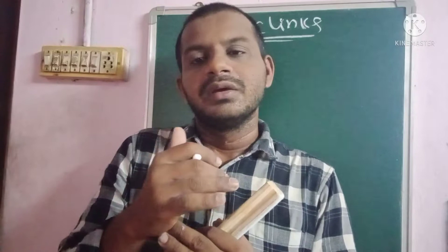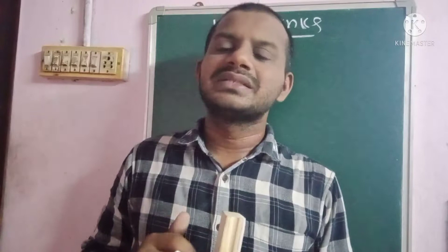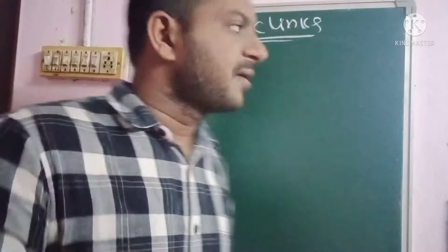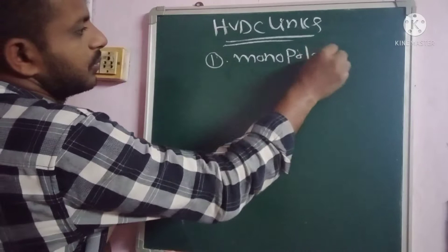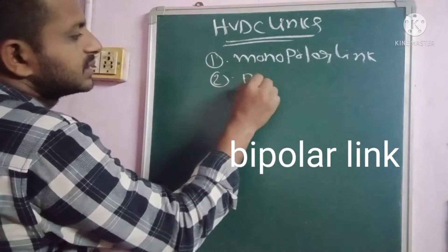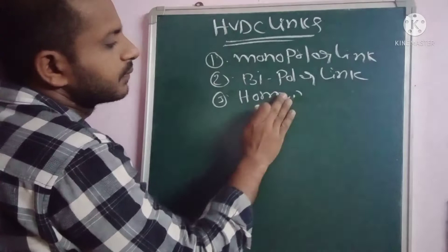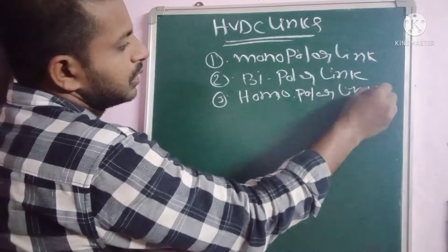In the HVDC transmission system, there are different types of losses including corona losses, skin effect, proximity effect, and Ferranti effect. However, HVDC links offer minimum losses when compared to the HVAC transmission system, giving better performance. There are three different types of HVDC links: the monopolar link, the bipolar link, and the homopolar link.